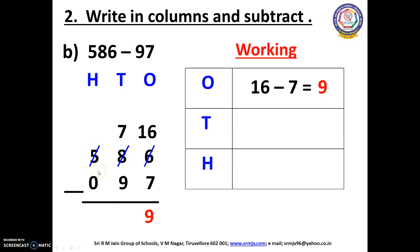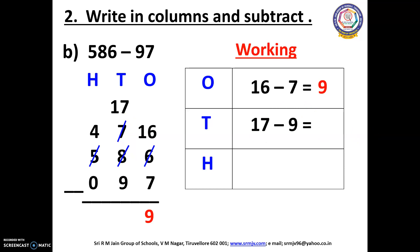Let us move to the 10's place. Here we have 7 and 9. We cannot subtract 9 from 7, so we have to borrow from the 100's place. Now 5 will change into 4 and 7 will change into 17. Now we can subtract 17 minus 9. Open your fingers: 9 after — 10, 11, 12, 13, 14, 15, 16, 17. How many fingers have you opened? Yes, we have opened 8 fingers. So we have to write 8 here.